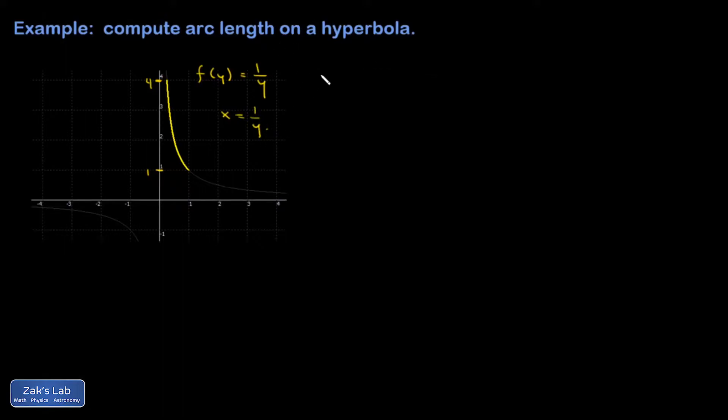And this changes the arc length formula a little bit, so that an arc length contribution would be given by a derivative with respect to y of this function, squared, plus 1, dy.